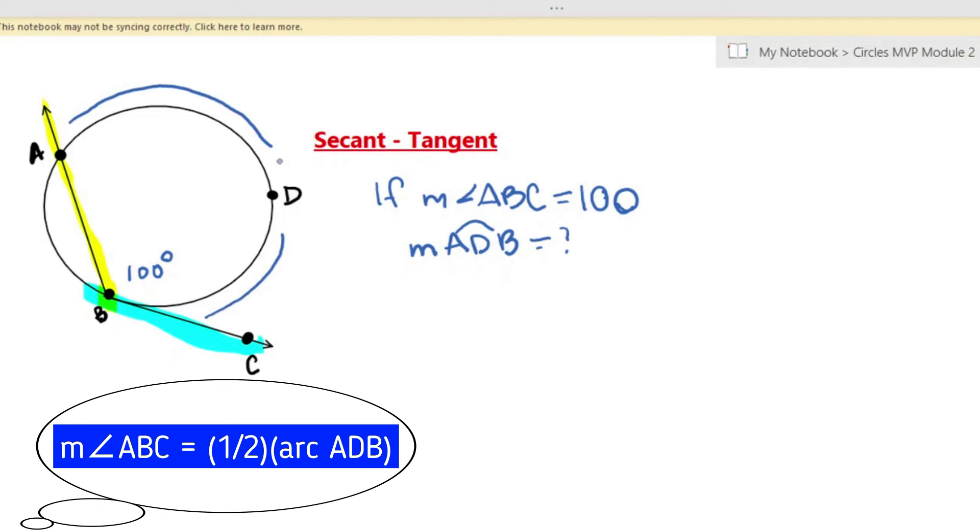Okay, so if you said 200, you are correct. Let's go over this. To figure out the measure of that arc, you would do 100 times 2, which will give you 200.